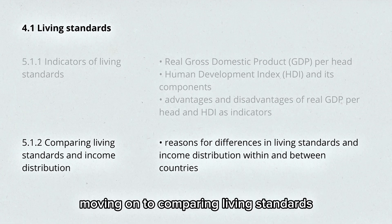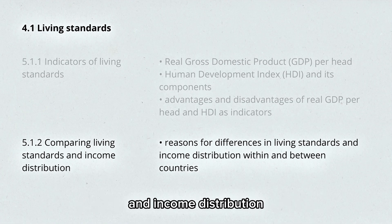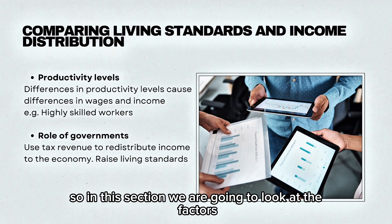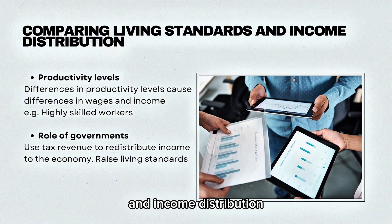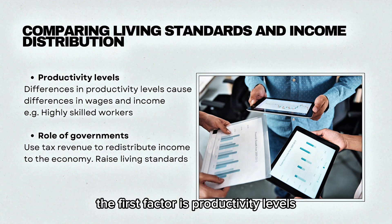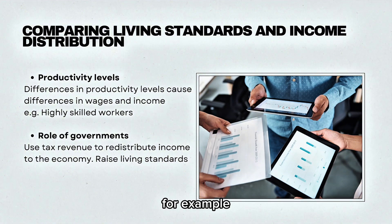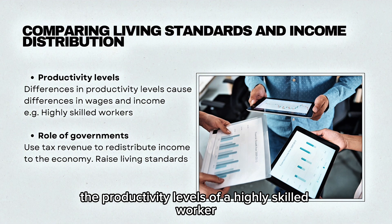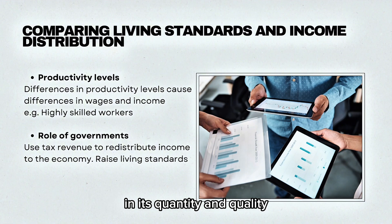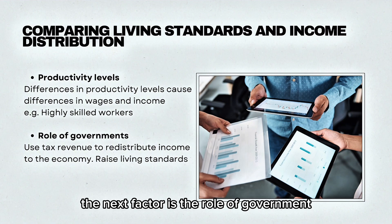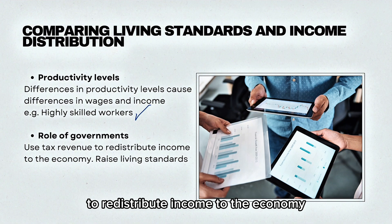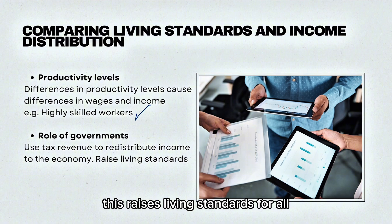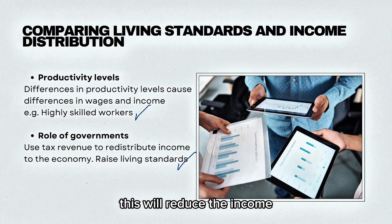Moving on to comparing living standards and income distribution. We are going to look at the factors that contribute to the differences in standard of living and income distribution. The first factor is productivity levels — for example, the productivity of a highly skilled worker compared to an unskilled worker in terms of quantity and quality. The next factor is the role of government — whether they use tax revenue to redistribute income to the economy, which raises living standards for all and reduces income inequality within an economy.